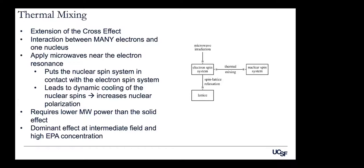Thermal mixing is an extension of the cross effect — the underlying spin physics are still being worked out. Here there is an interaction between many electrons and a single nucleus, often thought of in terms of electronic spin systems and Zeeman baths at different temperatures. Applying microwaves near the electron resonance puts the electron spin system and nuclear spin system in contact, leading to dynamic cooling of the nuclear spins, effectively increasing nuclear polarization. It requires less microwave power than the solid effect and is dominant at medium to high field. In practice, cross-effect and thermal mixing are our combined transfer mechanisms.